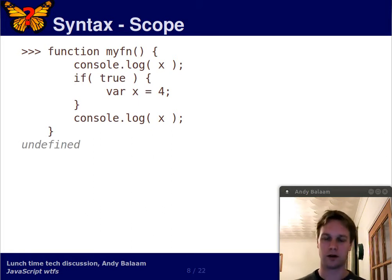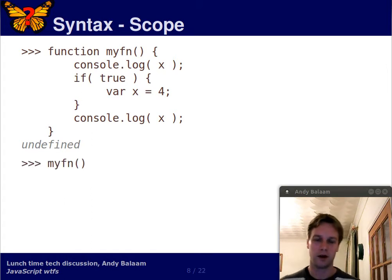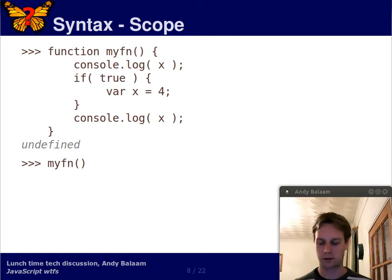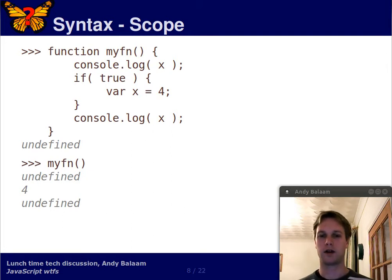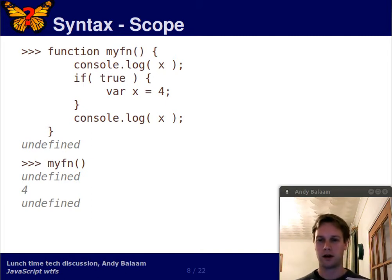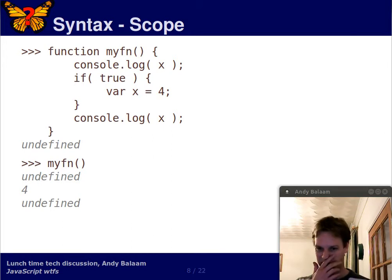When we type all that into the Firebug console, the response we get is undefined, which may not fill you with confidence. But what happens when we call this function? When we enter the function, x is undefined — no one's defined it yet. We then go into the if and declare x. Then we come out of the if and print the value of x, and the value printed is 4. The last undefined you see is just the return value of the function — it doesn't return anything, so Firebug prints undefined.